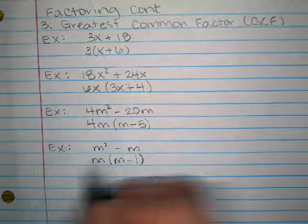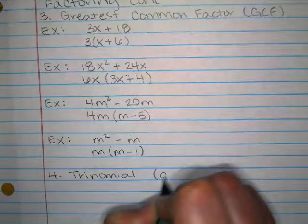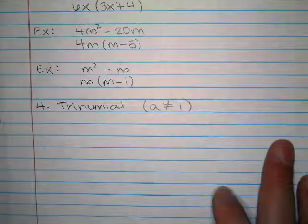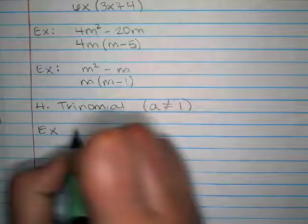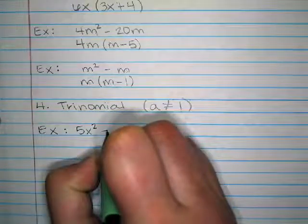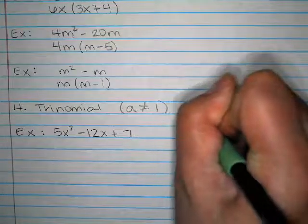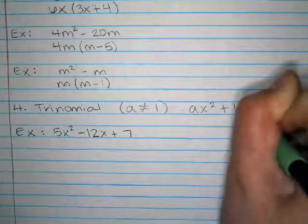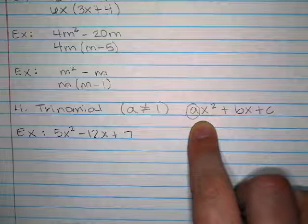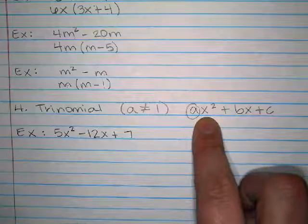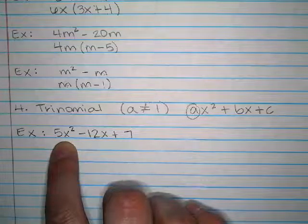The next type of problem is a trinomial where the a value does not equal 1. These are quadratics in the form ax² plus bx plus c, and what I'm saying is there's a number in front of x². Previously we looked at problems where x² was alone, meaning a equals 1. Now we're going to look at problems where x² has a coefficient, which makes them a little more difficult.